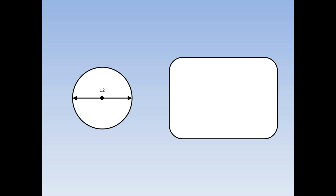Here's a circle with diameter 12. To find the area, first of all write out the formula: area equals pi r squared. Now pi is equal to 3.14, and r squared means the radius times the radius. For this circle we know the diameter is 12, but we don't know the radius. But we do know the radius is half the diameter. Half of 12 is 6, so we've got 3.14 times 6 times 6, and that's equal to 113.04 centimetres squared.